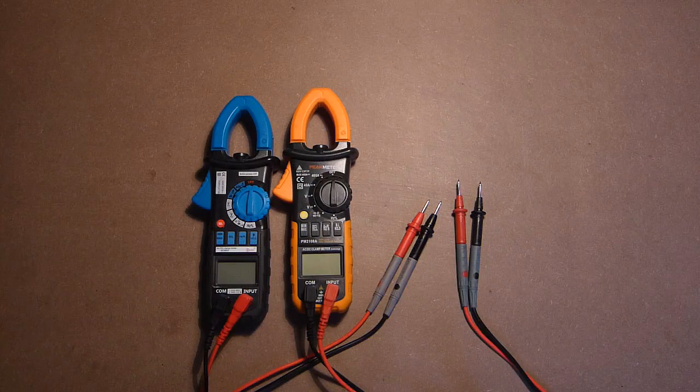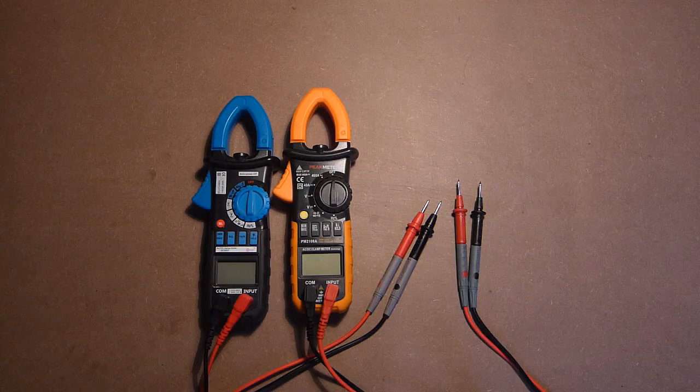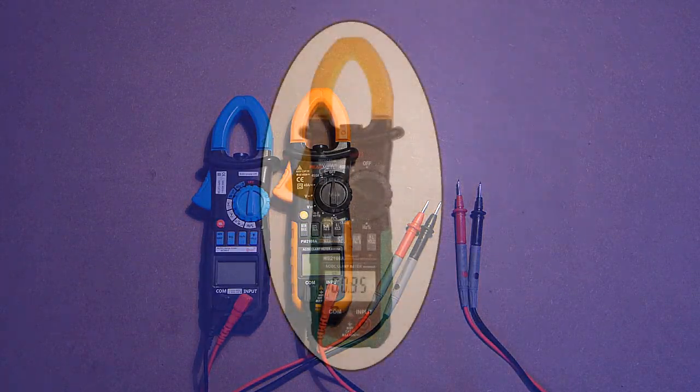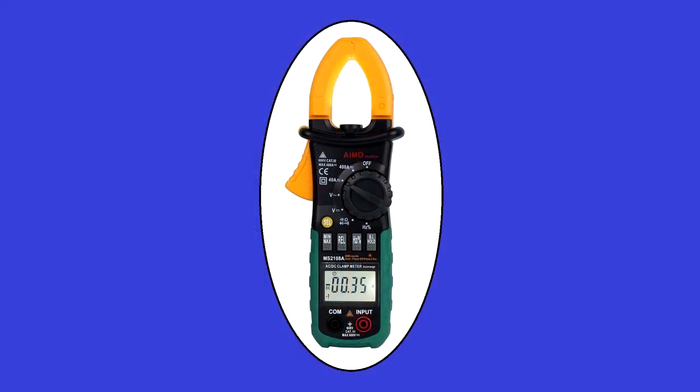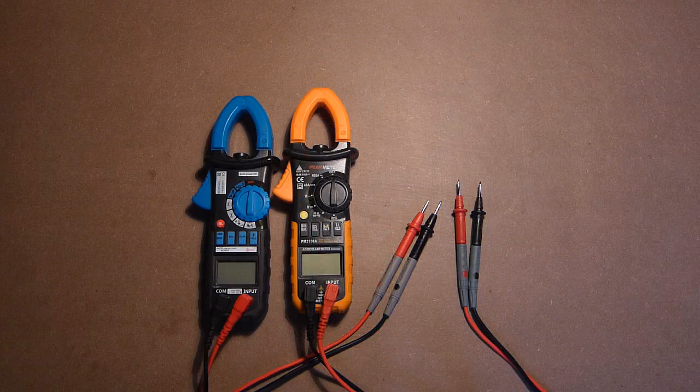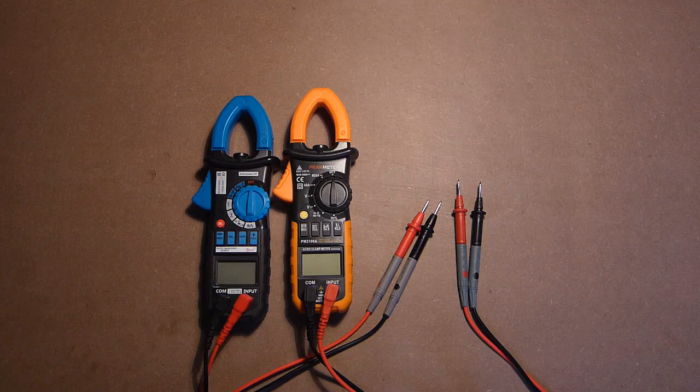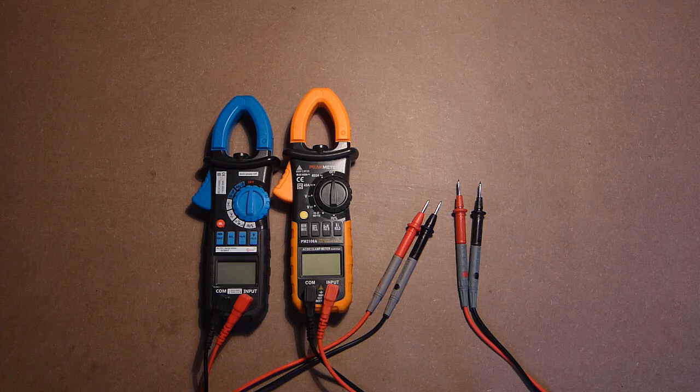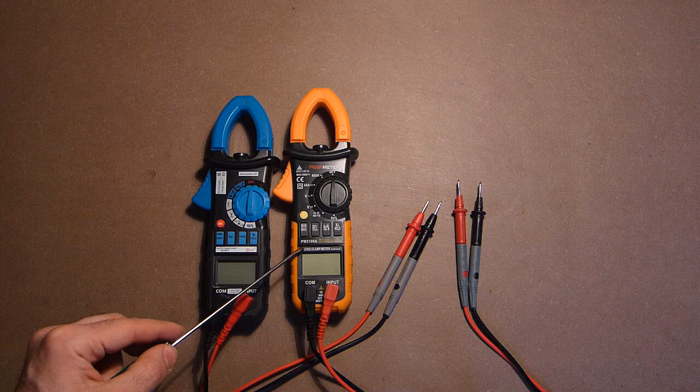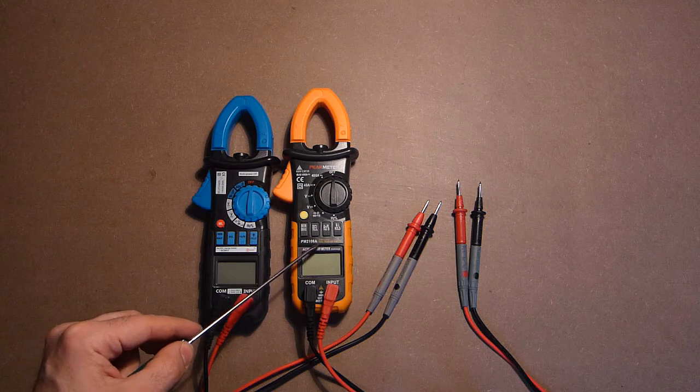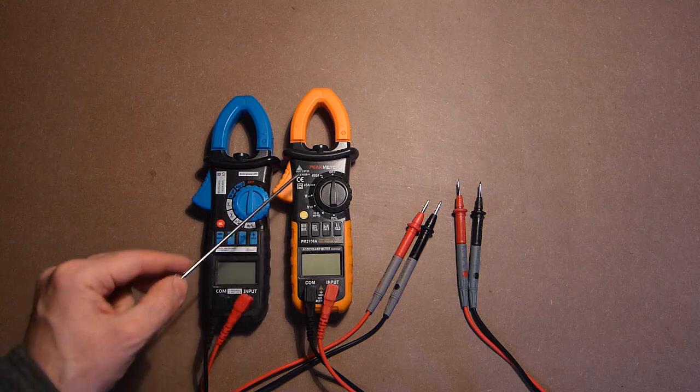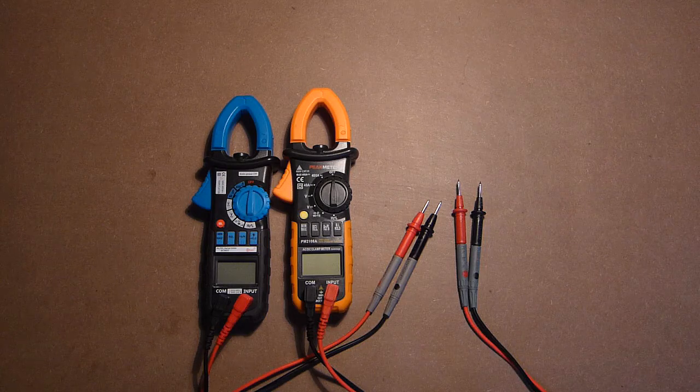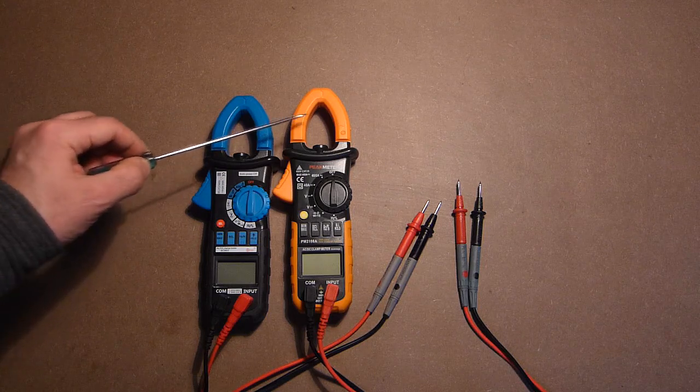The first similar device which was tested by me was not Mastec. It was an aim-o-meter with the same name MS-2108A. This device has almost the same name, but instead of MS it has PM-2108A because it's Peak Meter.